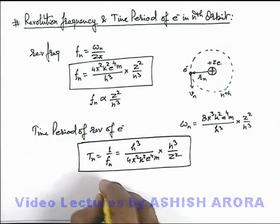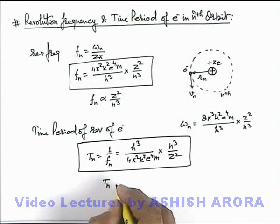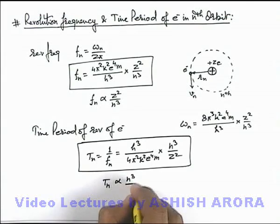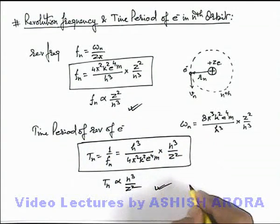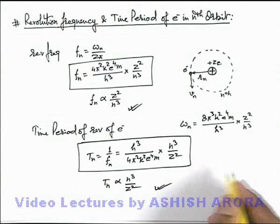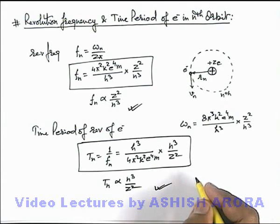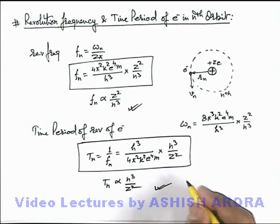And from this relation we can see apart from constant term the time period of electron in n-th orbit is proportional to n³ by z². So both of these results are quite useful in various numerical applications. In coming sections we'll also discuss some solved examples based on these results.